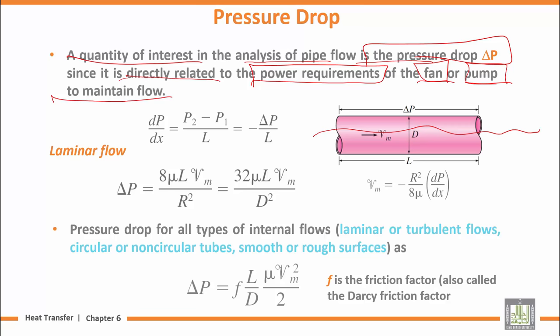So there will be a pressure difference, delta P, between inlet 1 and outlet 2. P2 minus P1 over L, where L is the length of this pipe. The pressure difference is related to the pressure drop.